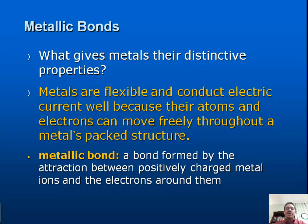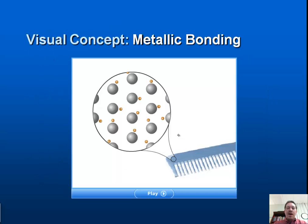A metallic bond is defined as a bond formed by the attraction between positively charged metal ions and the electrons around them. For example, when a comb is used to brush hair, the movement causes a static charge on the comb — an uneven distribution of electrons — resulting in a buildup of either more negative or more positively charged ions on the comb's surface.